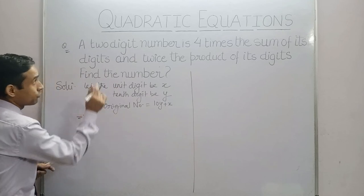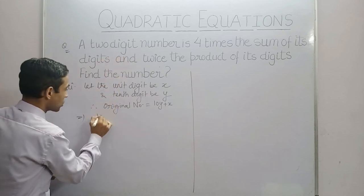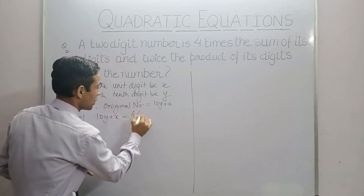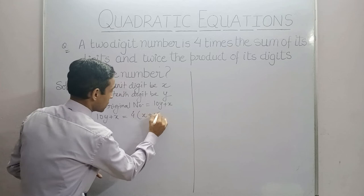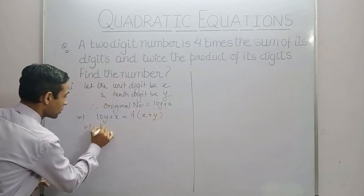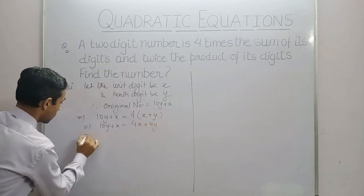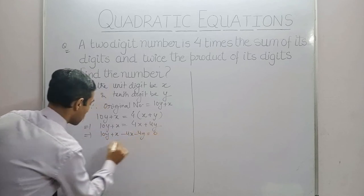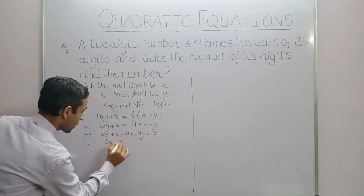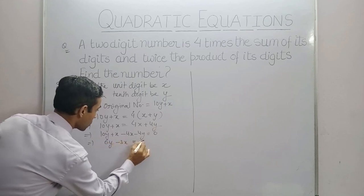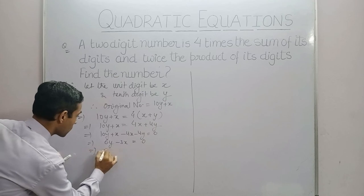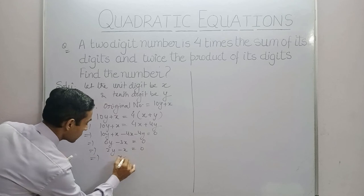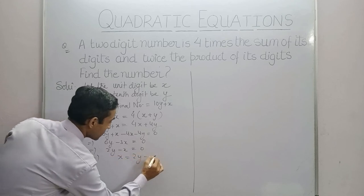Now, according to the question, the first condition is given: the original number equals 4 times the sum of the digits. So 10y + x = 4(x + y). We will simplify this: 10y + x = 4x + 4y. This will give 6y - 3x = 0. Here we have 3 common. So we will get 2y - x = 0, and this will give us x = 2y. Let's take this as first equation.